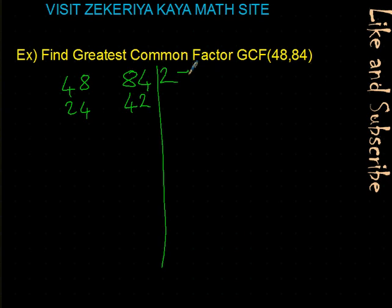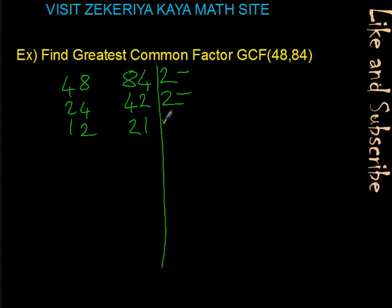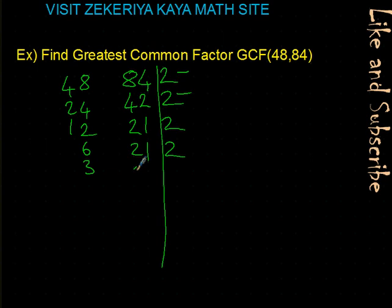Continuing with 2: 24 divided by 2 is 12, and 42 divided by 2 is 21. We divided both, so we sign this 2 as well. Continuing again with 2: 12 divided by 2 is 6, but 21 is not divisible by 2, so we keep it. Then 6 divided by 2 is 3, and 21 divided by 2 — we cannot. We keep it. Now neither is divisible by 2, so we move to the next prime, 3.